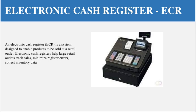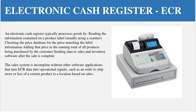How does it actually work? The Electronic Cash Register works by reading information contained on the product label, normally called a barcode. They scan it, and by scanning the barcode the price of the product is read by the reader and added to the running total of the sale. Data is also sent to sales and inventory software after the sale is complete.